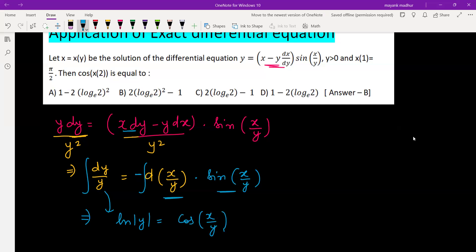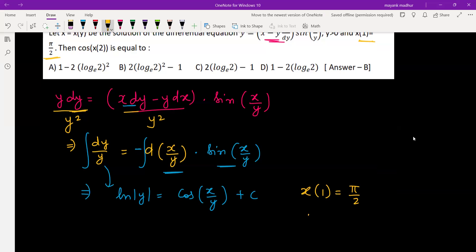Then you apply integration constant plus C. They have given x(1) equal to π/2, means input is 1 output is π/2. Here x is output and y is the input, so y is 1 and x is π/2. ln(1) is zero, x is π/2, cos(π/2) is also zero, so we got the value of C and now C equals zero.